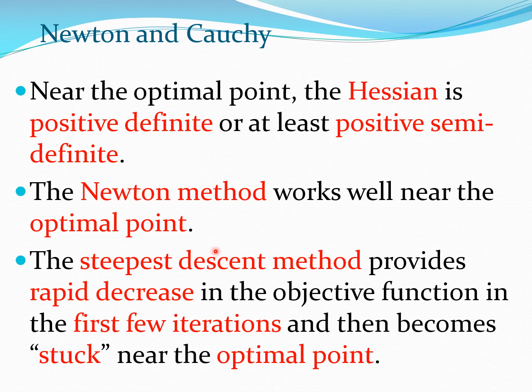Now if we look at the steepest descent method, which is sometimes also known as the Cauchy method, it provides a rapid decrease in the function in the first few steps and then it becomes stuck near the optimal point. So these two methods have disparate behavior patterns: the Newton method works close to the optimal point and the steepest descent method works well when you are far away from the optimal point.